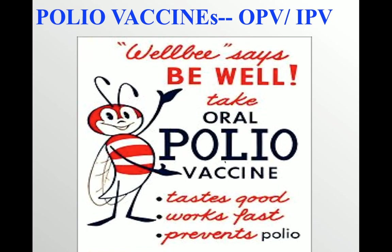WHO has recommended that OPV should remain the vaccine of choice for routine infant immunization, but it should include one inactivated polio vaccine dose in the schedule. In polio-endemic areas like Pakistan, India, or Afghanistan, WHO also recommends a zero dose at birth, followed by a primary series of three OPVs and at least one inactivated polio vaccine given by intramuscular injection.